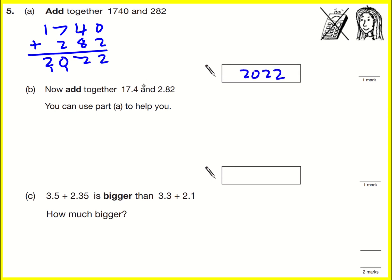Then I asked to add some decimals, we can use part A to help us. Actually we have to spot that essentially we've divided this number by 100 to give this one, and this number by 100 to give this one. So if we divide the answer here by 100, it will give us the answer, which is 20.22.